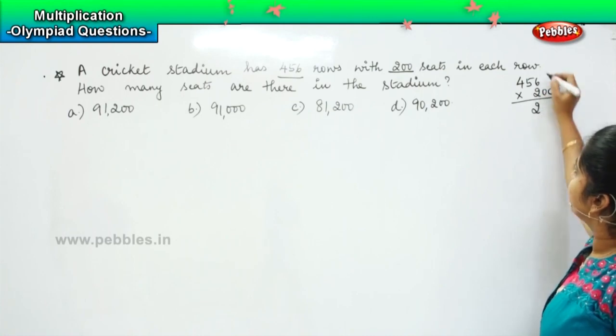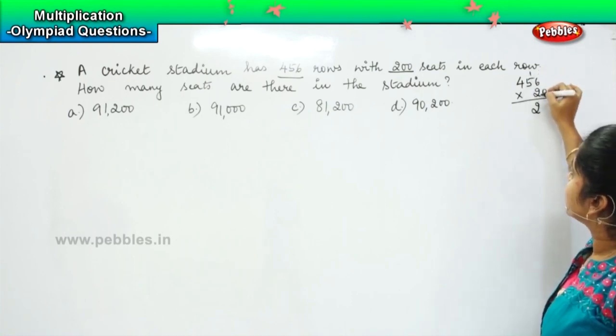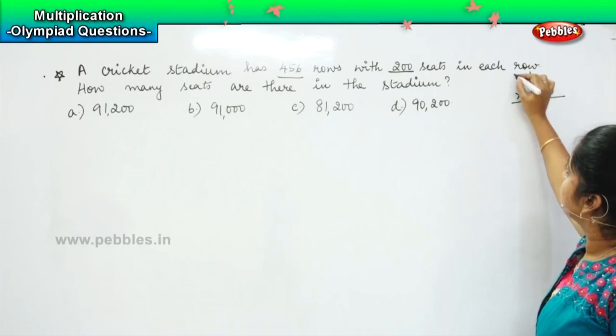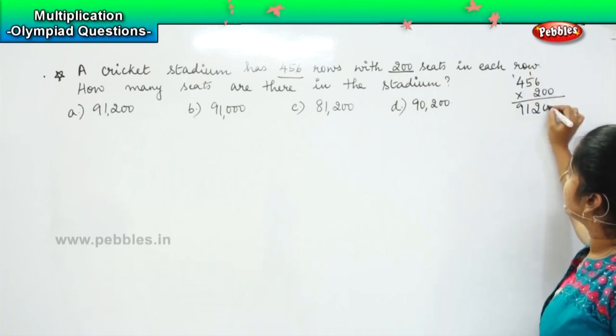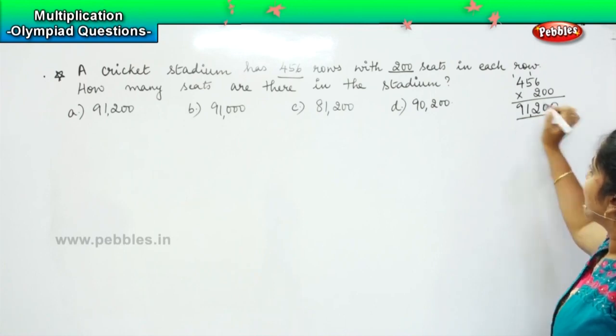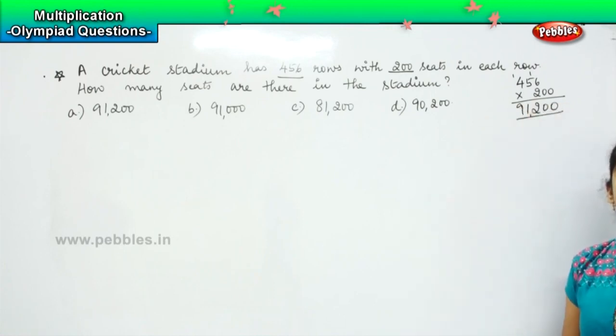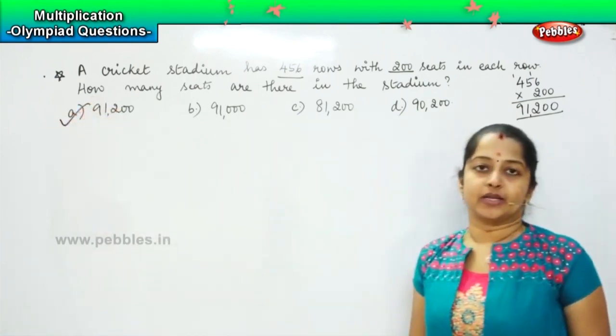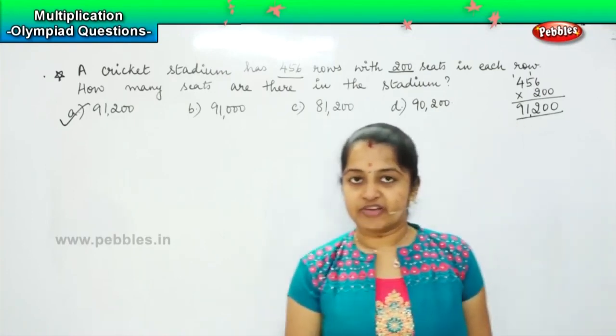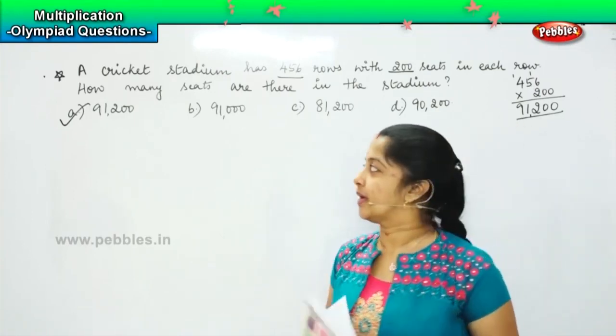So, 6 twos are 12, carry 1. 5 twos are 10, 10 plus 1 is 11, carry 1. 4 twos are 8, 8 plus 1 is 9. And these two zeros we will add at the back. So my answer is 91,200. Yes. So option A is the right one. Clear? Shall we move to the next one?